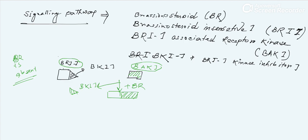When BR is present, BKI1 is separated from BRI1, allowing BRI1 and BAK1 to attach. When these two parts — Brassinosteroid Insensitive 1 (BRI1) and BRI1-Associated Receptor Kinase (BAK1) — get attached, they become activated. After this activation, they inhibit BIN2. BIN2 is a factor that stops the signaling pathway of transcription factors, so BIN2 is an important part of the brassinosteroid signaling pathway.